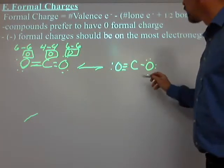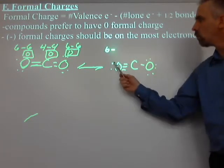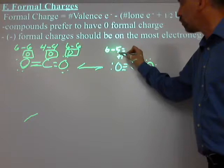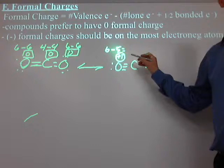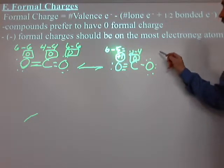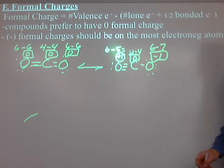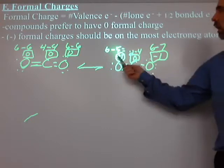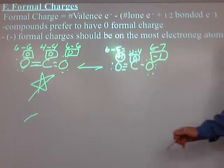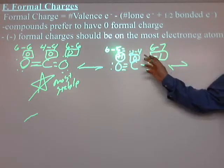For the asymmetric CO2 resonance structure with a triple bond, the oxygen on the triple-bond side gets a formal charge of +1, carbon remains 0, and the oxygen on the single-bond side gets -1. We don't like having a +1 and -1 when we could have everybody at zero. That confirms the symmetric double-bond structure is the most stable resonance structure for CO2.